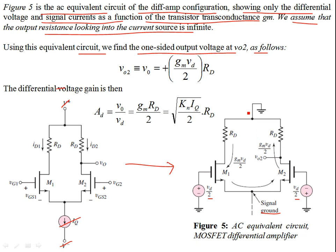For the single-sided output taken from M2, the AC drain current is GM × (VD/2). Multiplying by RD gives the output voltage: VO2 = −GM × (VD/2) × RD. The differential voltage gain is the ratio VO/VD = −GM × RD / 2. Substituting GMF = GM/2 = √(KN × IQ / 2), the differential gain is fully determined in terms of the Q-point current IQ.